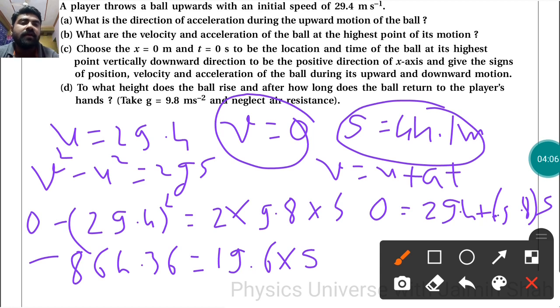v is zero, u is 29.4 plus 9.8t - here negative sign will be there because this is the journey where acceleration and velocity are opposite. That's why I have to write -9.8. Now t = 29.4 ÷ 9.8, so 29.4 ÷ 9.8 will be 3. So time taken to reach the maximum height is 3 seconds.